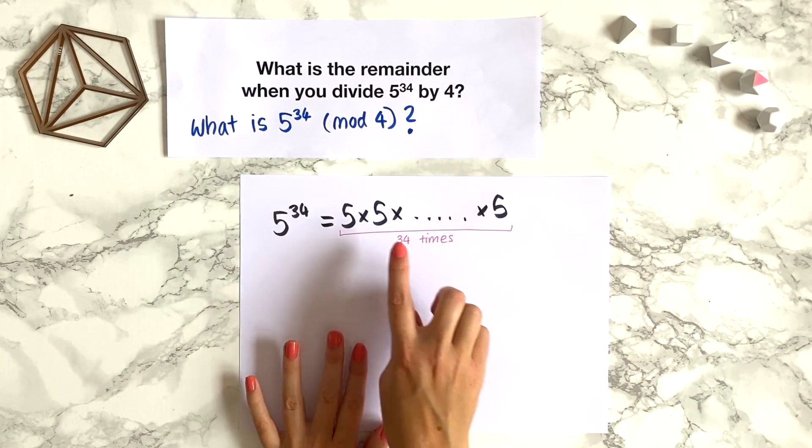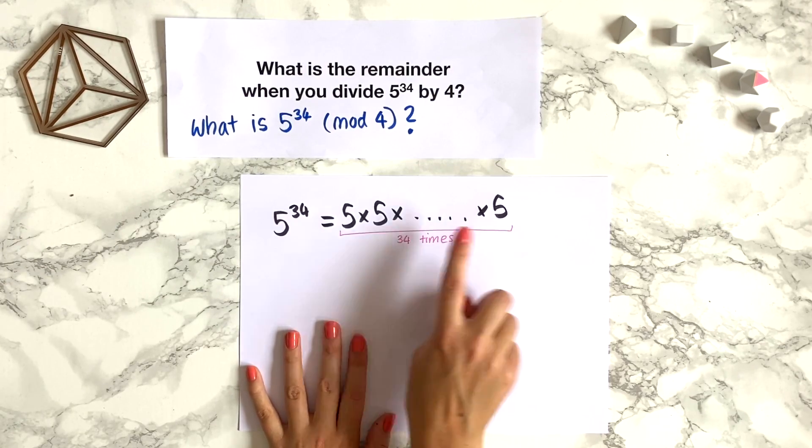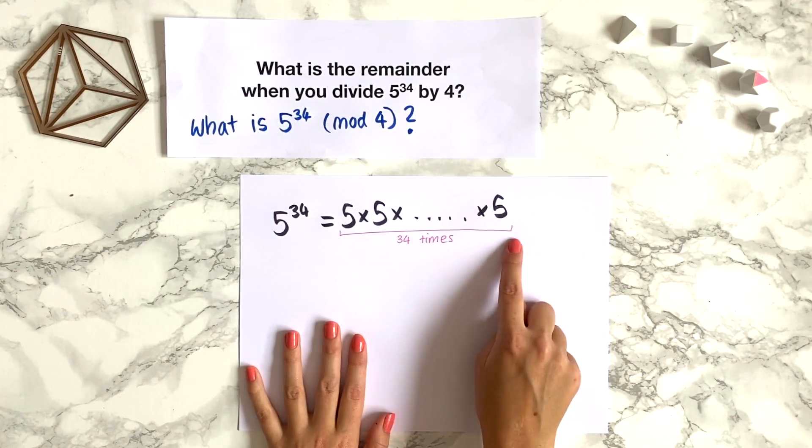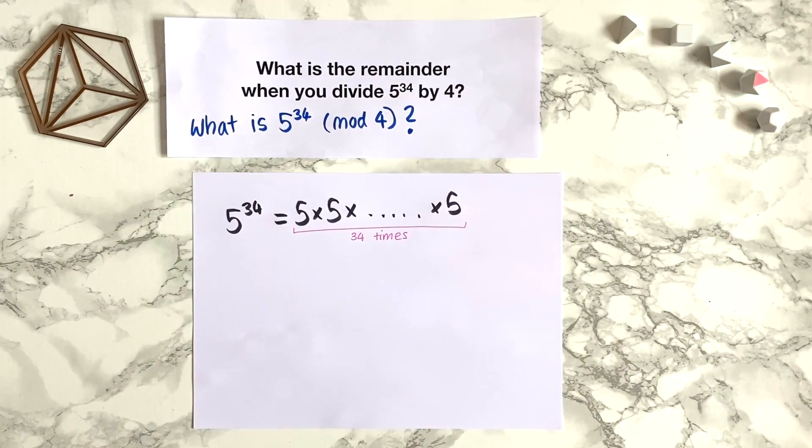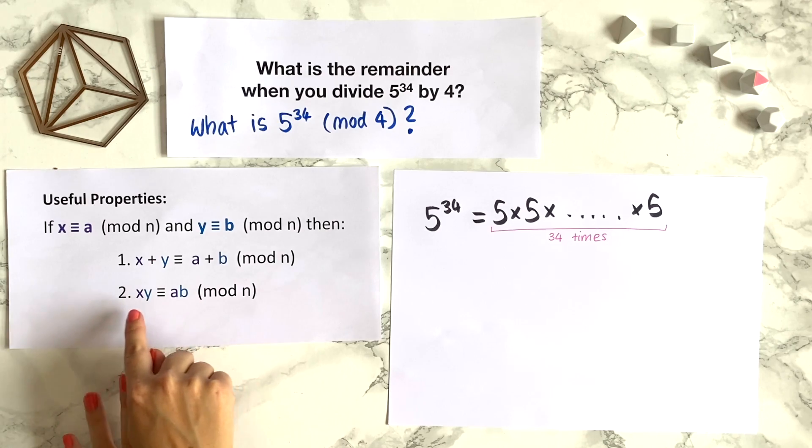So we want to evaluate this product modulo 4, but we know a theorem that helps when evaluating products at a certain modulo. We've got this theorem here, so we want to look at the second part of the theorem, which is about multiplication.